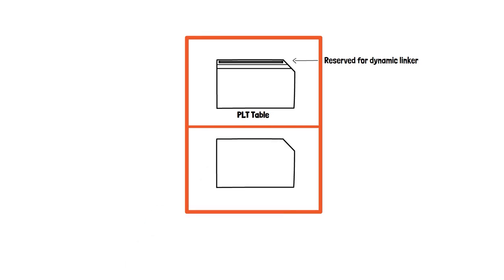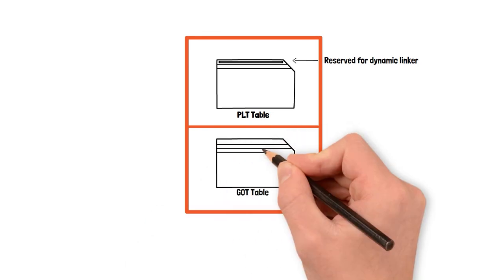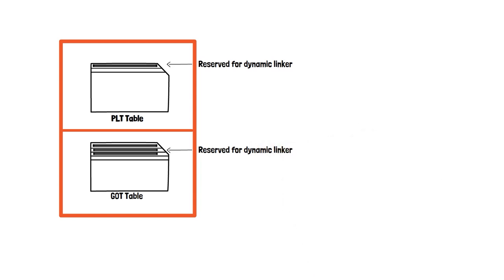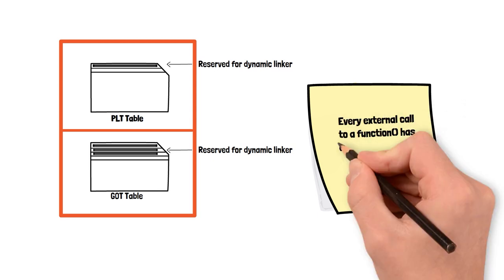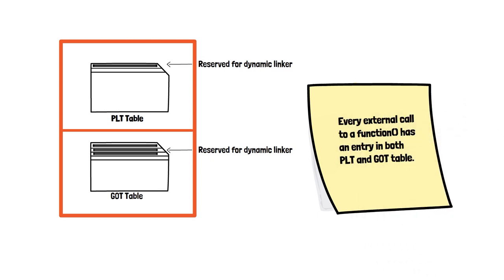Meanwhile, at the bottom you can see we have the Global Offset Table (GOT), which also reserves some entries for dynamic linker. Keep in mind that every external reference or a call to a function defined outside the application will have a corresponding entry in the PLT or GOT table.